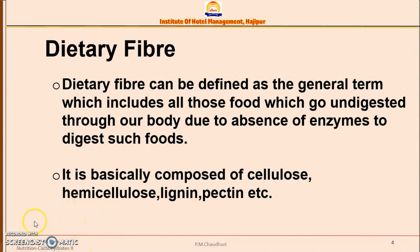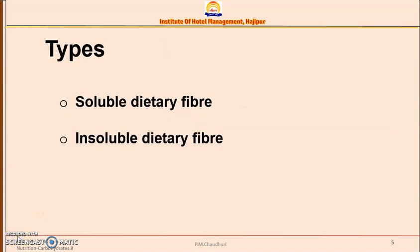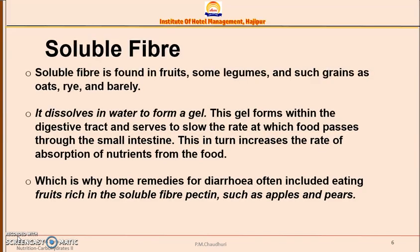Dietary fiber can be defined as a complex carbohydrate obtained from plants that is not absorbed by our body — it goes undigested — however, it aids digestion. It is basically composed of cellulose, hemicellulose, lignin, pectin, and similar compounds. It is of two types: soluble dietary fiber and insoluble dietary fiber.